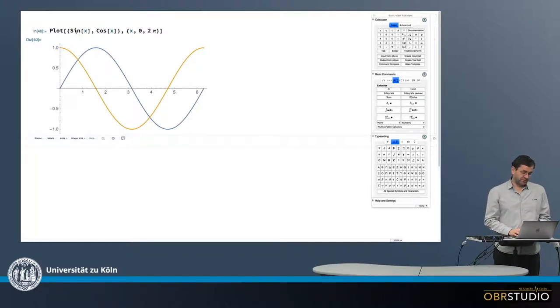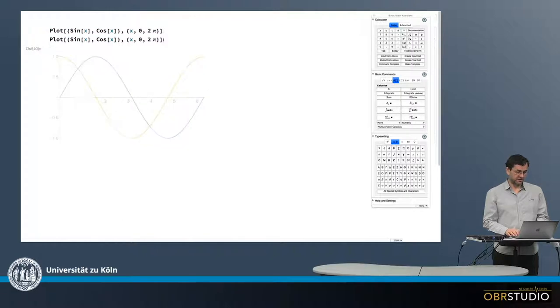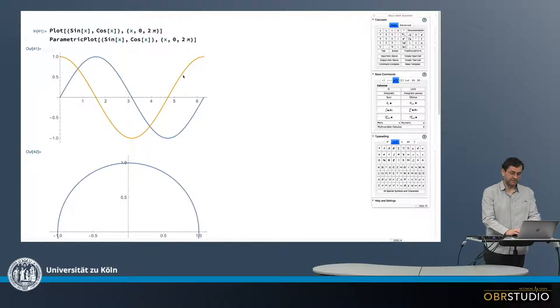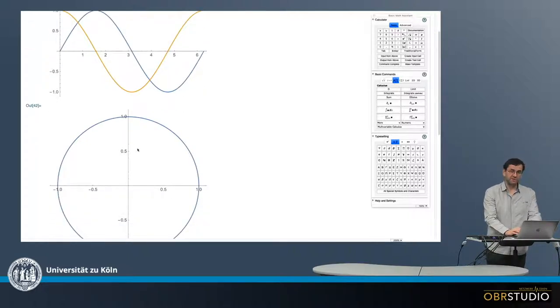And basically, this plot can already be used for a parametric plot, because in a parametric plot, this is on the x-axis and this is on the y-axis. So I use this entire expression here and use the command parametric plot, execute it, and this is then the parametric plot, which is a circle.